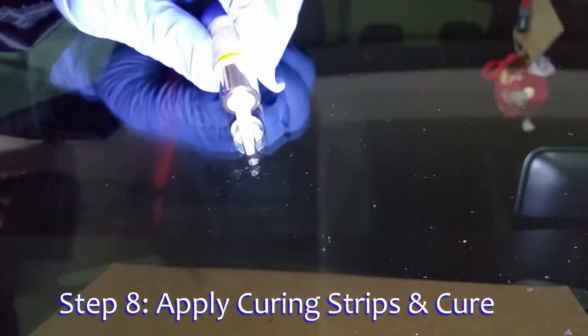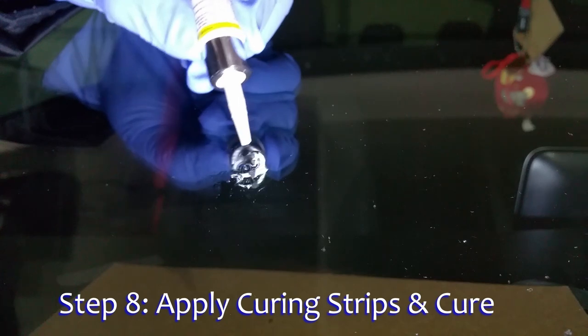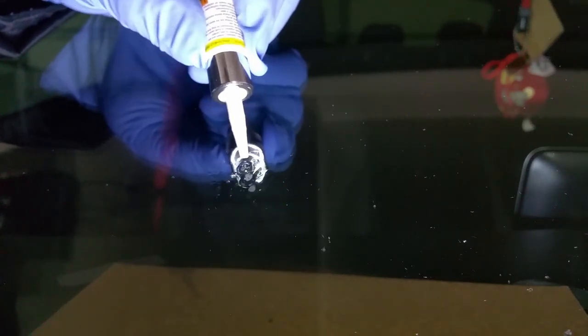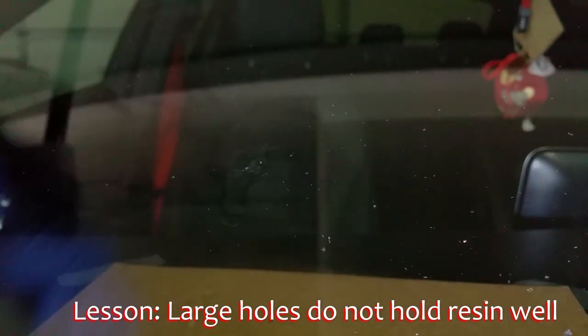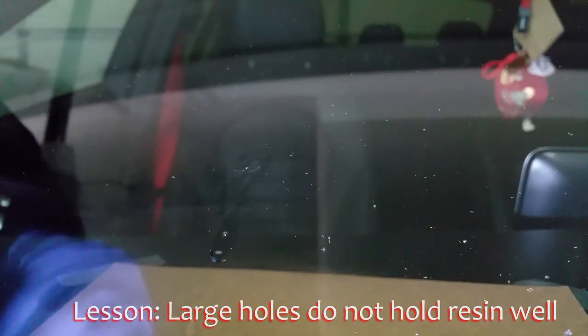Roll a drop or two of resin slightly above the hole and quickly and gently apply a curing strip. If you see any air bubbles in the repair area where the holes are, then you should reapply the strip. If you don't do this quickly, you can get air bubbles.